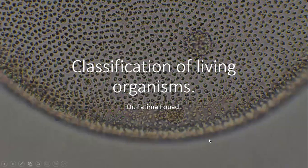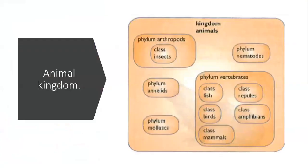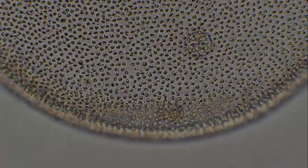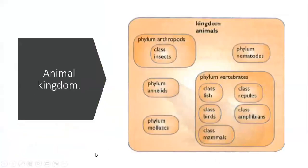Let's start by talking about the animal kingdom. The animal kingdom is the most detailed. Inside a kingdom we have multiple phylums, so inside the animal kingdom we have phylum arthropods, phylum nematodes, phylum vertebrates, phylum annelids, and phylum mollusks.